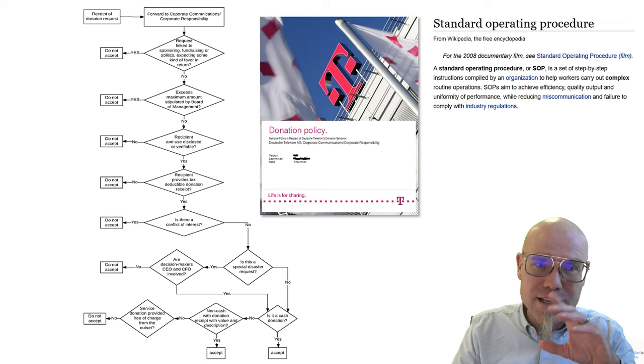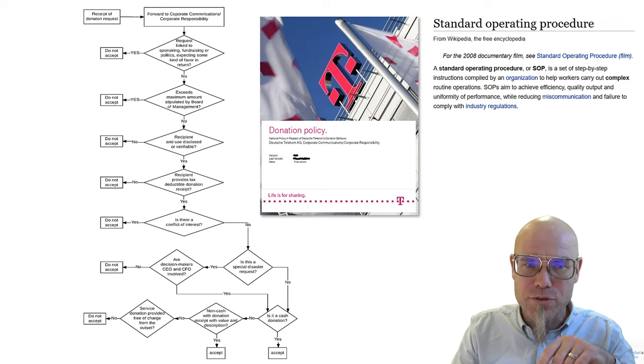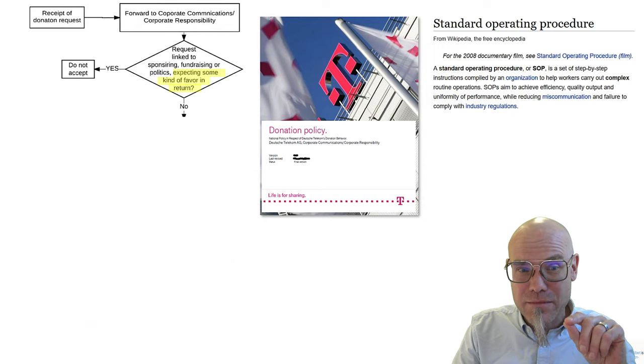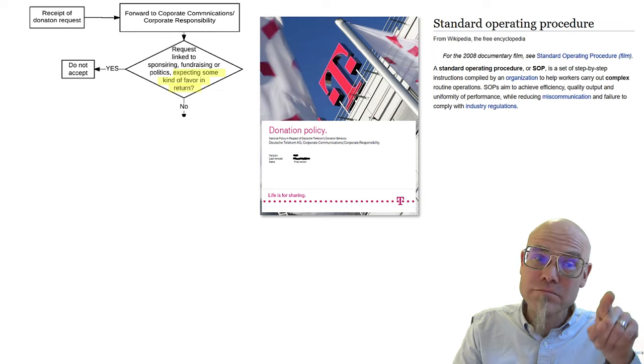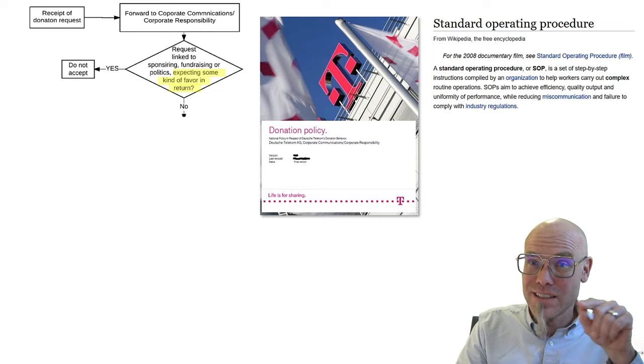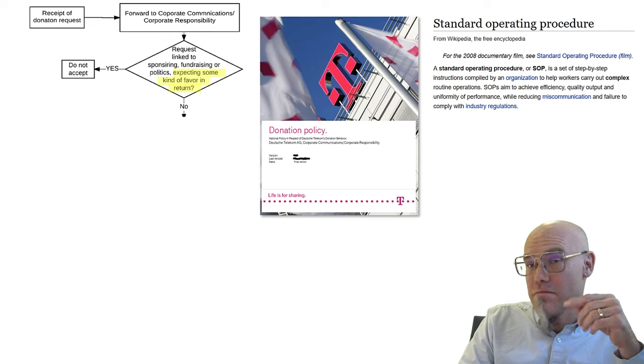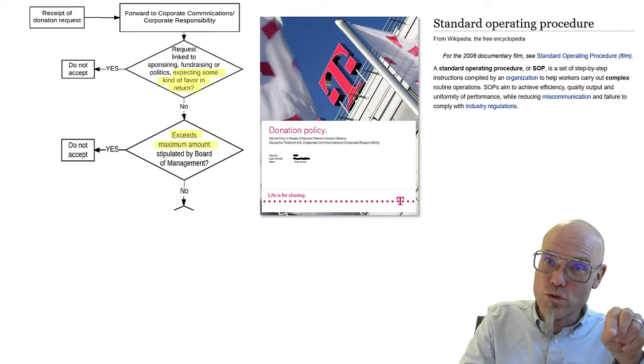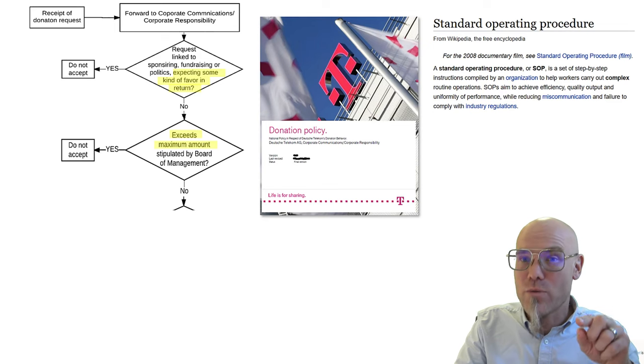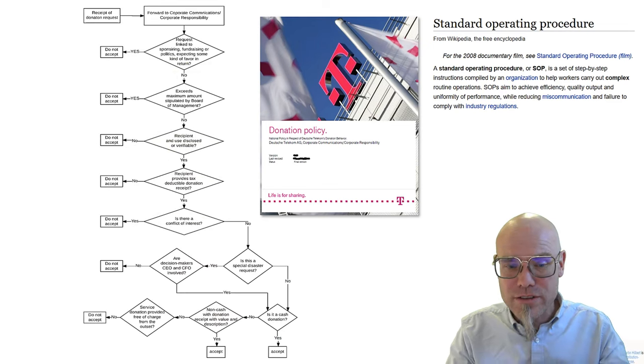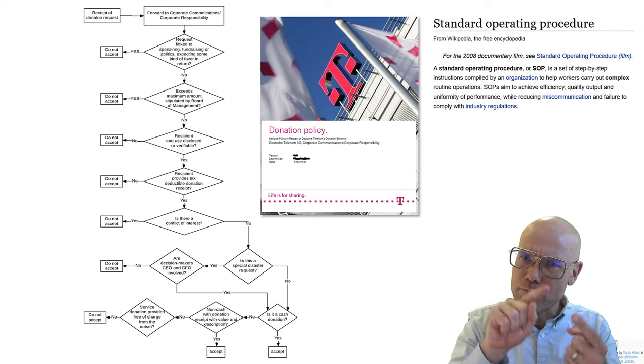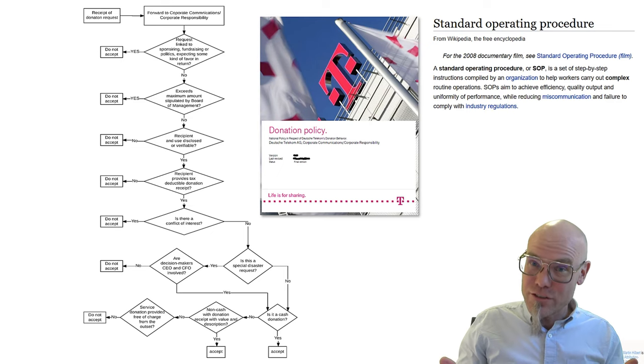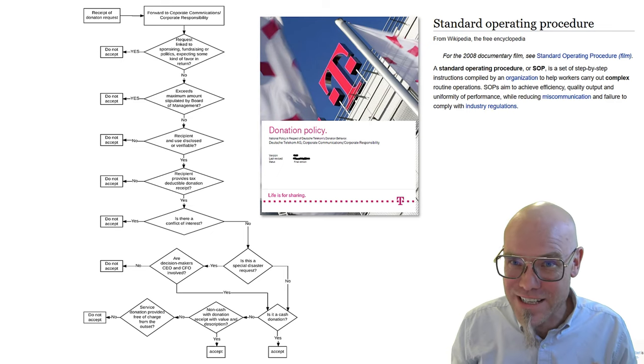This describes how you are supposed to behave, the recipe of behavior, when you receive a donation request. It says when you receive a donation request, first forward it to the corporate responsibility office and then check. If it is expecting some favor in return, then do not accept. If-then, sub-algorithm clause. If it doesn't expect, then if it exceeds a certain amount, do not accept. Otherwise, if-then-else, then keep on going. It explains, it tells you how to compute the decision of whether to accept the donation or not. Social behavior is full of that.